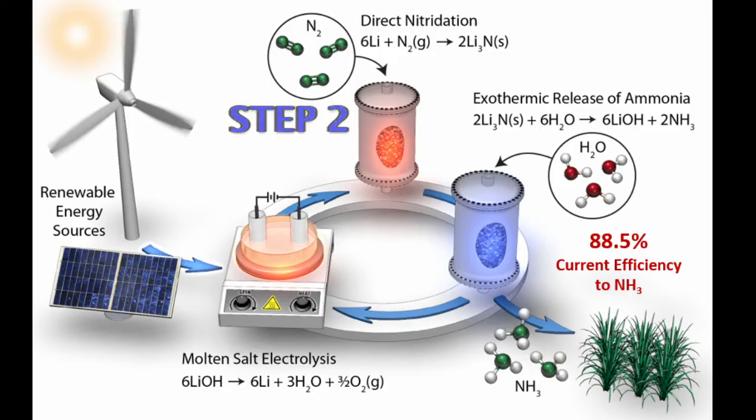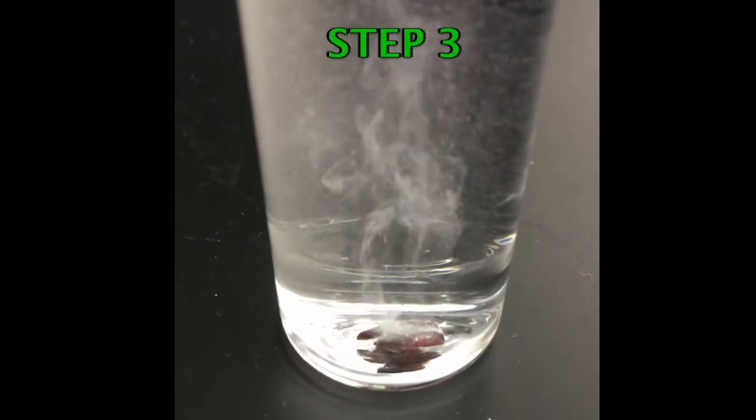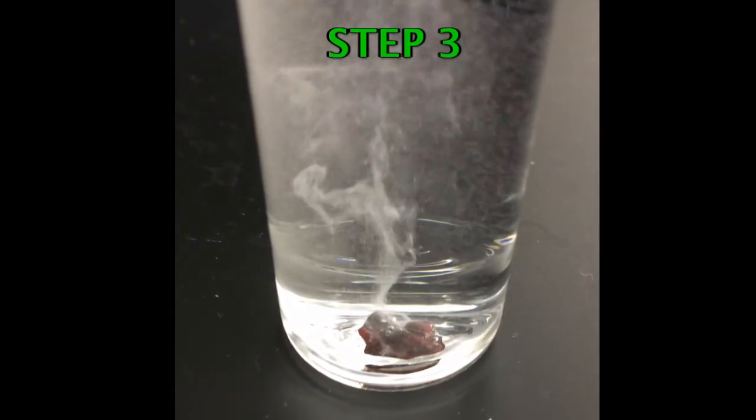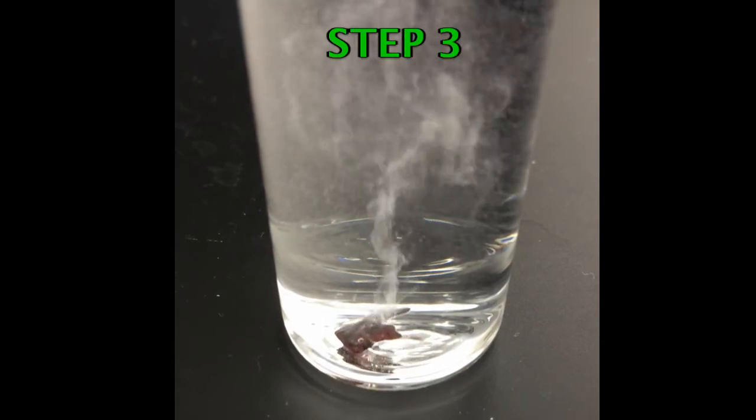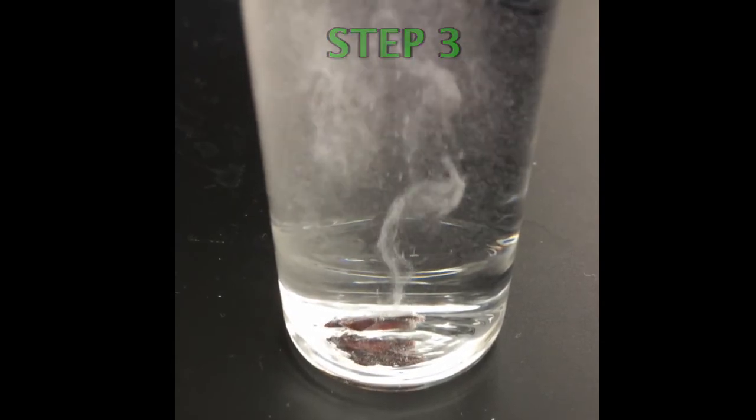Finally in step 3, we introduce water, our proton source, to hydrolyze the lithium nitride, reforming our lithium hydroxide and producing ammonia at an observed efficiency of almost 90%.